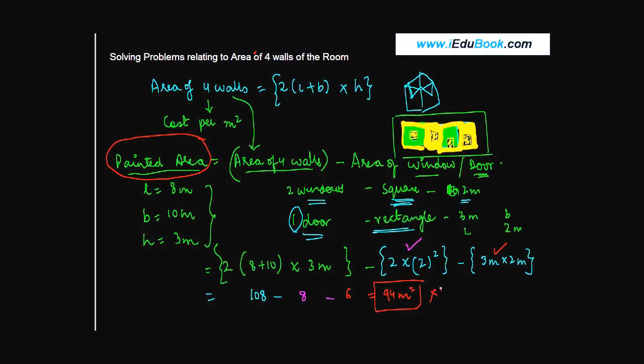Now if you know the cost - let's say it is 10 per meter square - you can just do 10 into 94, which gives you 940. So it becomes pretty easy to calculate these costs.